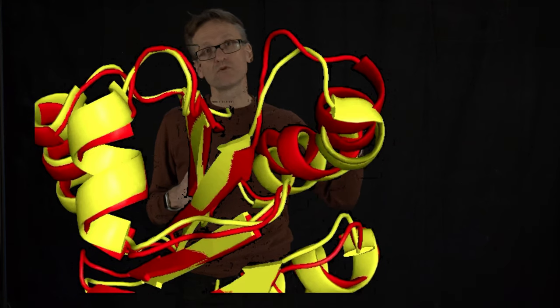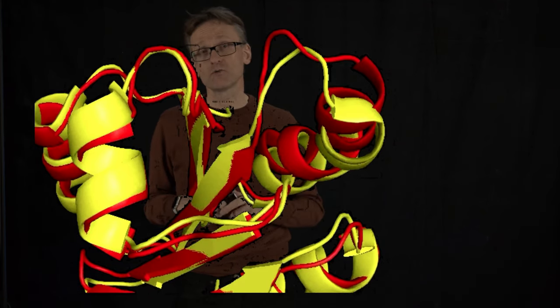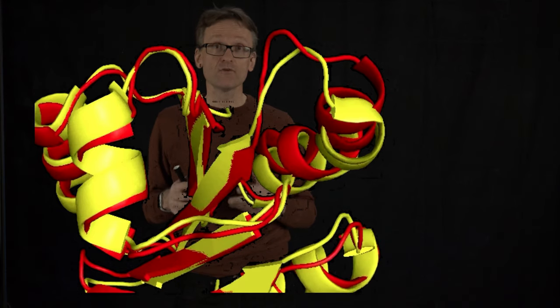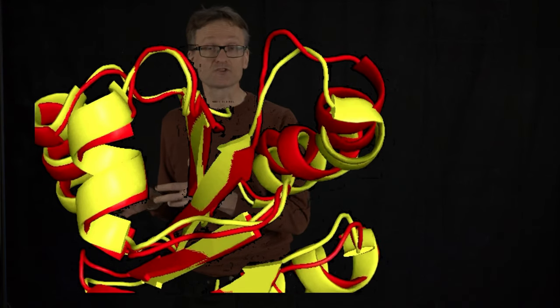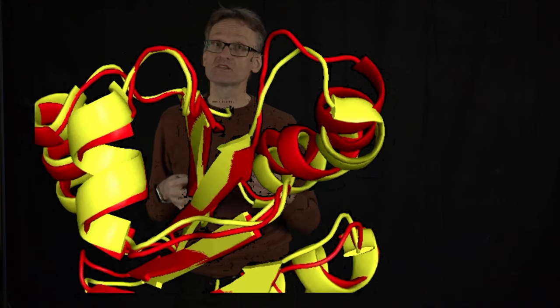What if there is a large loop or insertion here or something, right? Then I might not be able to build this region very well. But if I have another relative also with known structure but with 85% sequence identity then I will be able to build a much better model.